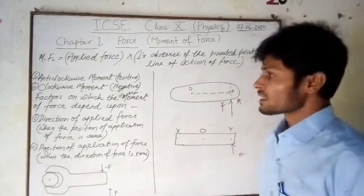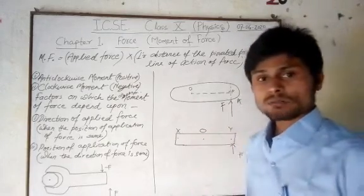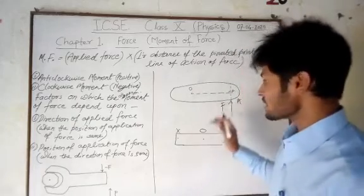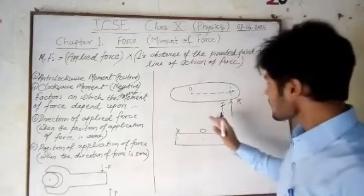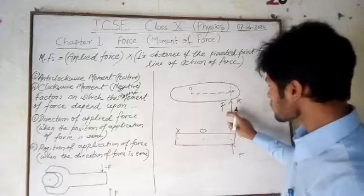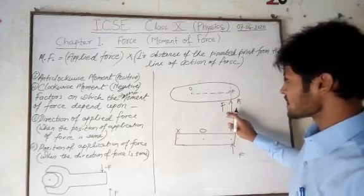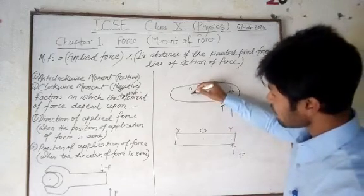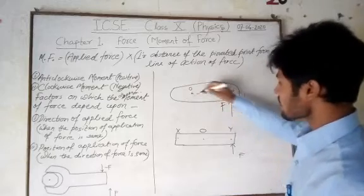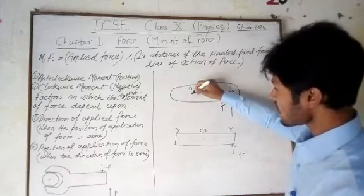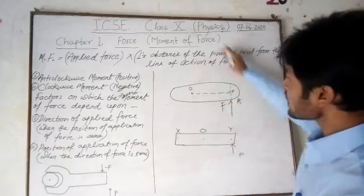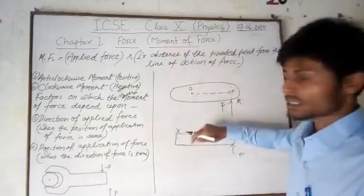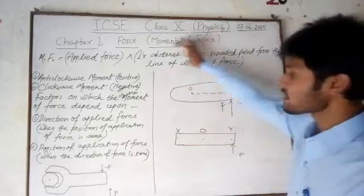There are two kinds of moment of force based on the direction of rotation. If we apply force here, it will rotate the body about the axis at O in an anti-clockwise direction.